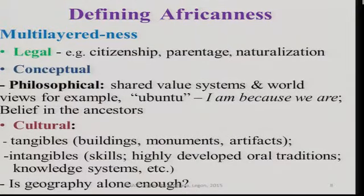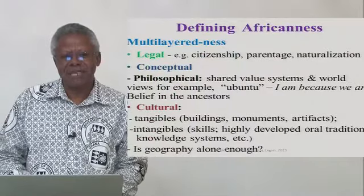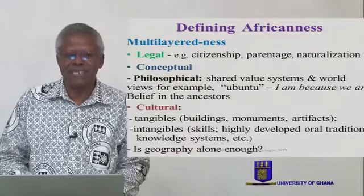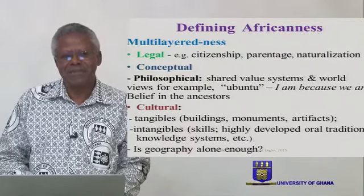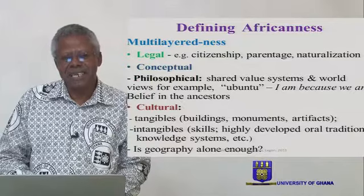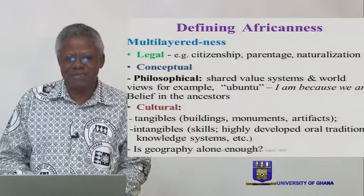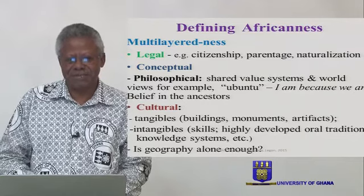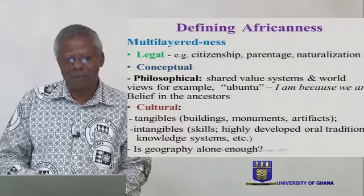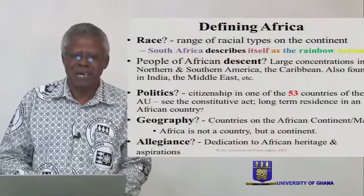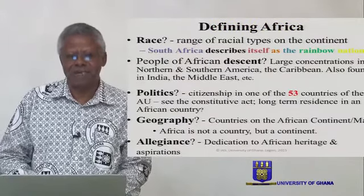We're talking about definitions of African-ness and the issue of the fact that African-ness is something that is multi-layered — it has several layers to it. What are some of these potential layers? There is the legal aspect, there is a conceptual and philosophical aspect, as well as the cultural aspects. You might even consider the question of geography. All these are important issues when it comes to defining Africa.